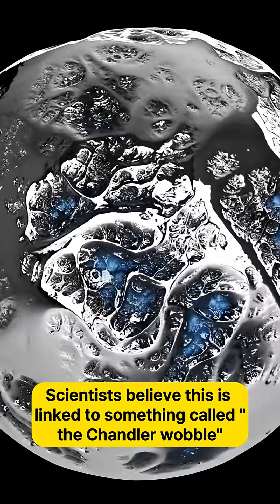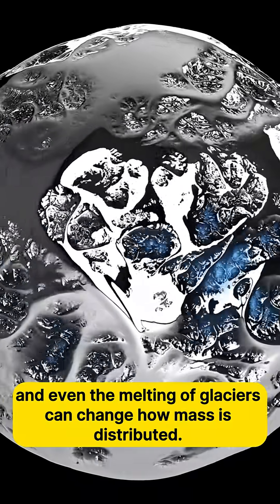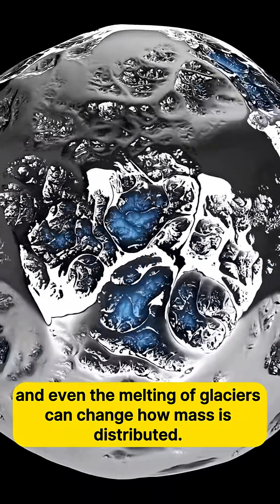Scientists believe this is linked to something called the Chandler wobble, and even the melting of glaciers can change how mass is distributed.